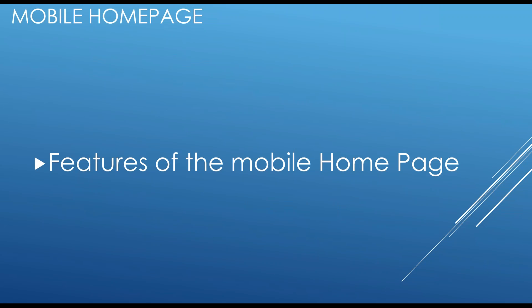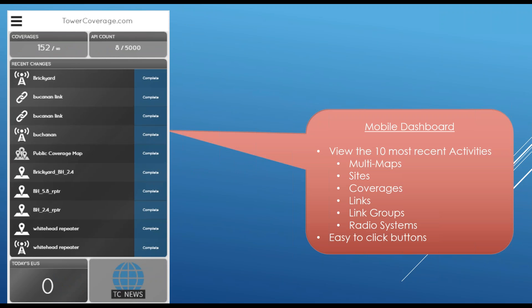We've done quite extensive development on our mobile site. You can visit it by going to www.towercoverage.com — it's completely integrated with our existing application. On the mobile dashboard you get the 10 most recent activities, today's EUS count, TC news button, and current coverage and API count. We've made the page large so you can click on it with your finger if you're on a cell phone.